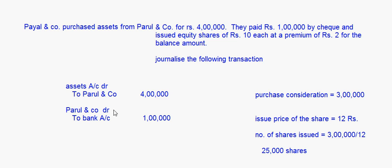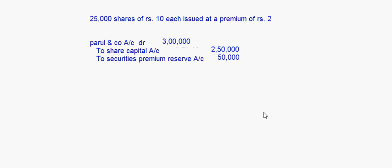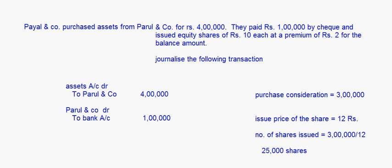So we have three journal entries: first, asset account debit to Parul and Company for the purchase; second, Parul and Company account debit to bank account for the cheque payment; third, Parul and Company account debit to share capital and securities premium reserve for the issue of shares. In the next session, I'll take up a question on shares issued when a business is acquired, and then we can move on to forfeiture of shares. Thank you.